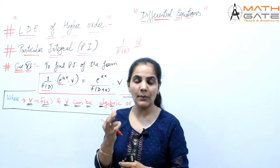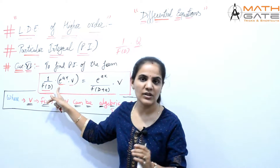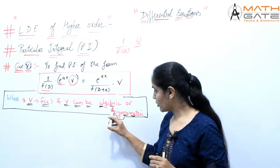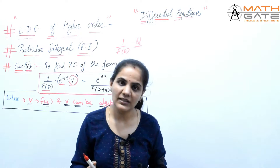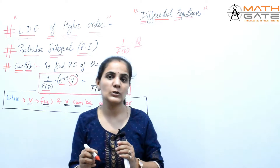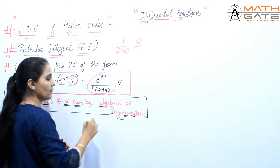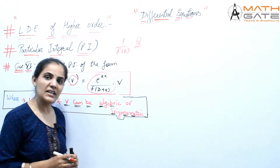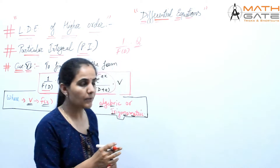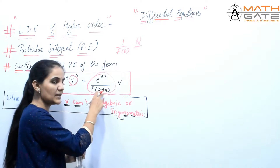Now the only case where we have two functions to apply at the same time is when we have e to the power ax into V. Here e to the power ax is the exponential function and V is the remaining function of x. This V can be trigonometric or algebraic. Generally when we see e to the power ax, we replace A directly, but now we have to write it as e to the power ax by F of D plus A into V.